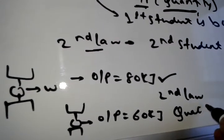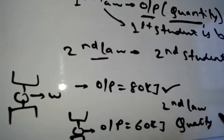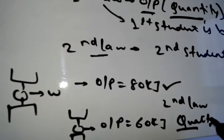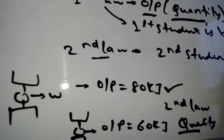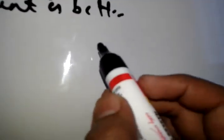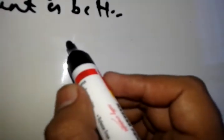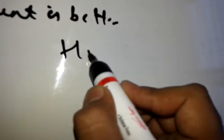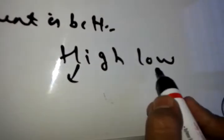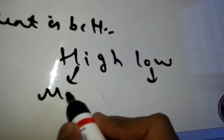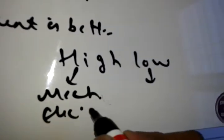The concept of the second law brings out quality. According to the second law, there is high quality energy and low quality energy. High quality energy includes mechanical energy and electrical energy, while low quality energy is heat energy.